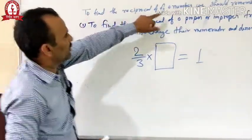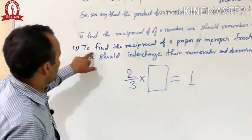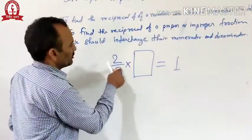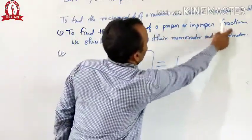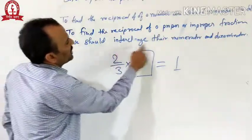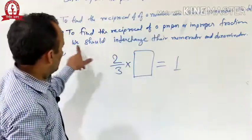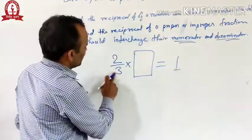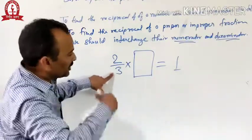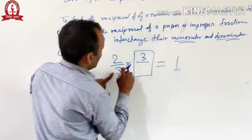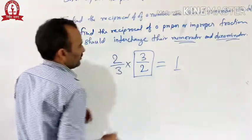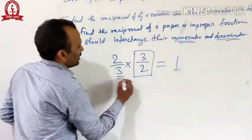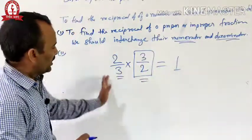To find the reciprocal of a number we should remember the following things. First, to find the reciprocal of a proper or improper fraction, we should interchange their numerator and denominator. Here the numerator is 2 and denominator is 3. We interchange them, so 3 becomes the numerator and 2 becomes the denominator. Then the product of 2 by 3 and 3 by 2 is 1.